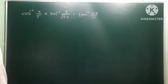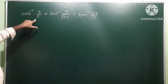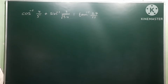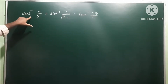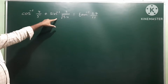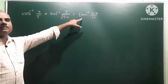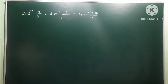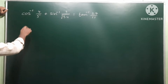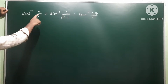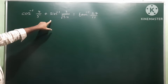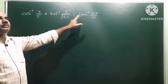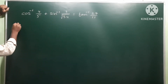We need to prove: cos inverse 4 by 5 plus sin inverse 3 by root 34 equals tan inverse 27 by 11. We take the first function as 'a' and the second function as 'b', so we need to find the value of tan(a plus b) to get the answer. That is the procedure to solve this problem.